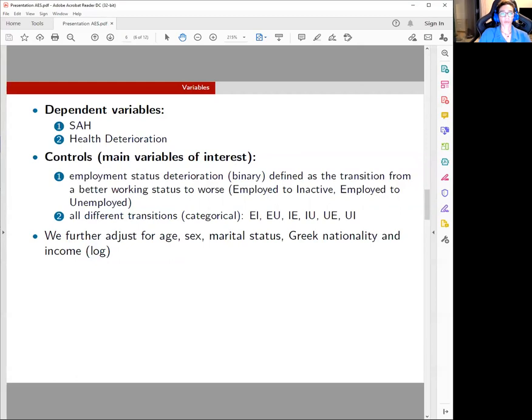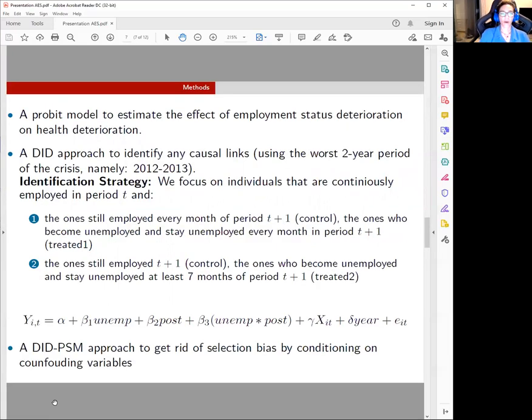Moving to the independent variables that we use, the main variable of interest is the one corresponding to the employment status transition. In all our models, we further adjust for age, sex, marital status, Greek nationality, and income in logs.